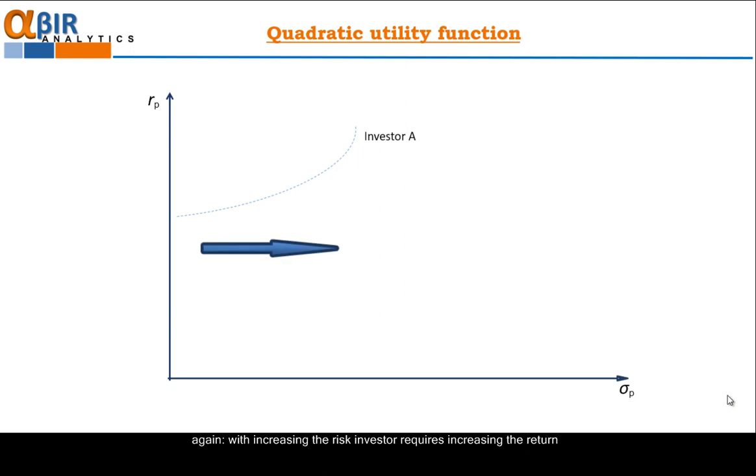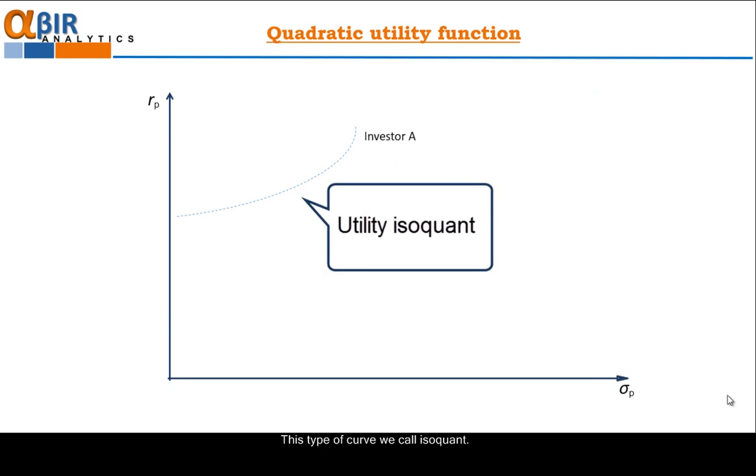Again, increasing the risk, investor requires increasing the return, which is something like remuneration of taking this risk. But as we see, with increasing risk, dissatisfaction from the risk increases faster. Investor starts worrying about this high level of risk. She or he wants to be paid higher for this enormous level of risk. We can see how the curve increases its bending. After some level of risk, investor cannot take it anymore. The risk is so high that no remuneration can cover dissatisfaction from this risk. As a result, investor will not invest at this level of risk. This type of curve we call iso-quant.